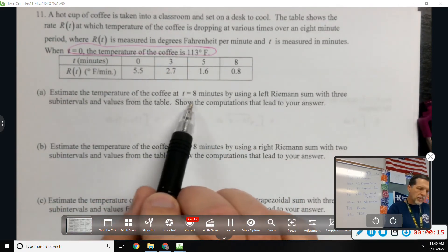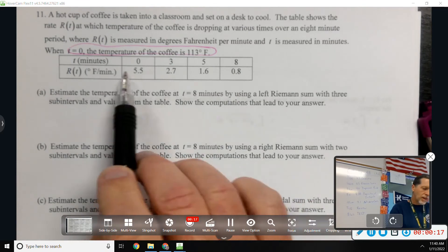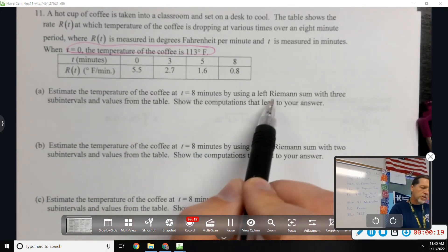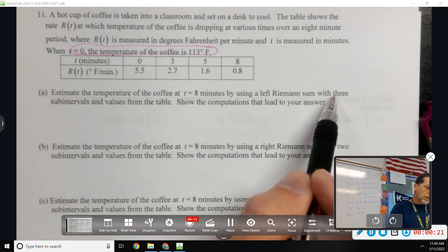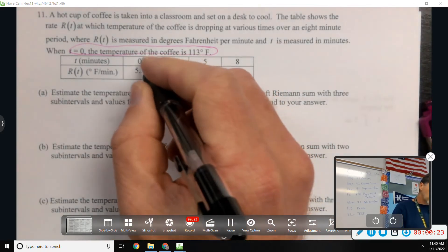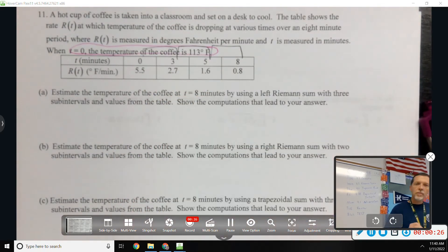Part A, estimate the temperature of the coffee at eight minutes, so after the full eight minutes, by using a left Riemann sum with three subintervals. So I'll have three rectangles, that makes sense, with four data points.